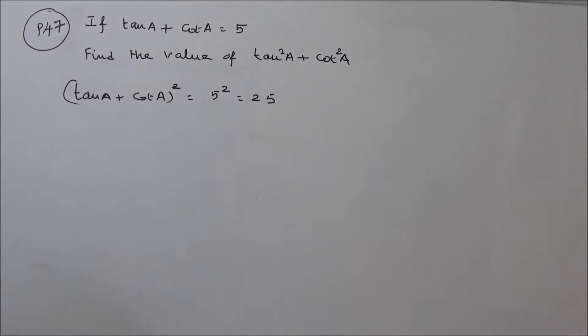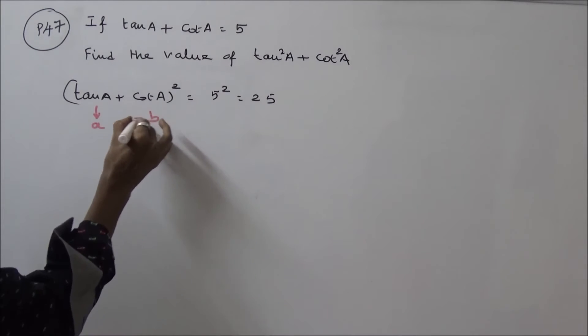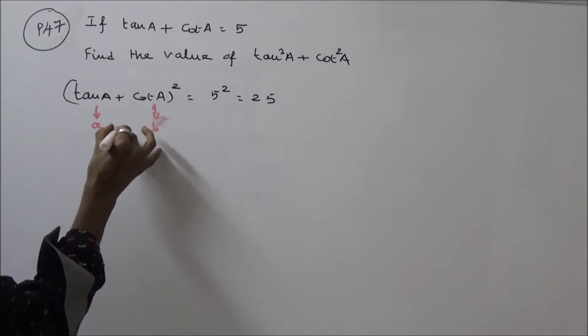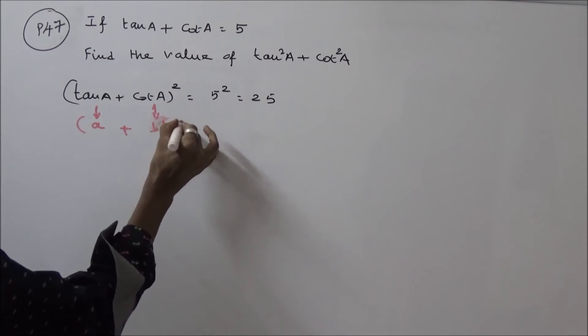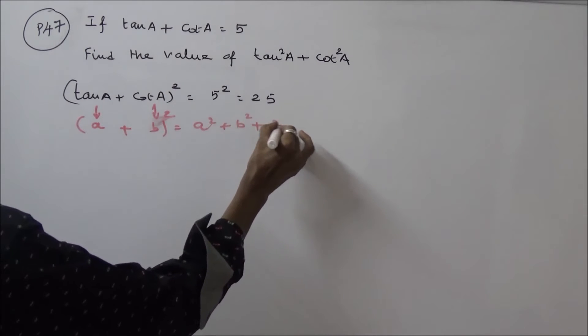Okay, now here, this is A, this is B. Cot A is B. A plus B, that is the whole square: A square plus B square plus 2AB.